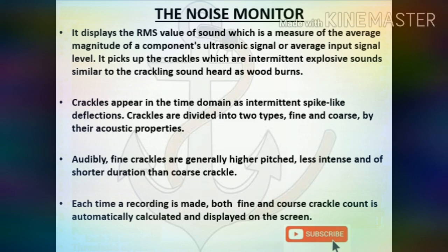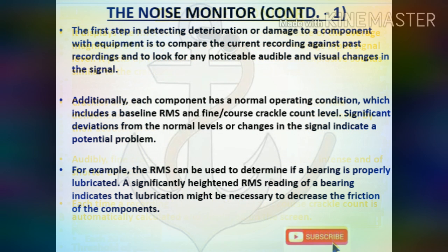Fine crackles are generally higher pitched, less intense, and of shorter duration than coarse crackles. Each time a recording is made, both fine and coarse crackle counts are automatically calculated and displayed on screen. The first step in detecting deterioration is to compare the current recording against past recordings and look for noticeable audible and visual changes. Each component has a normal operating condition including a baseline RMS and fine/coarse crackle count level. Significant deviations from normal levels indicate a potential problem. For example, a significantly heightened RMS reading of a bearing indicates that lubrication might be necessary to decrease friction.